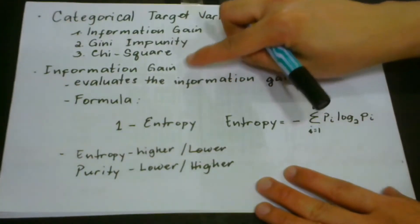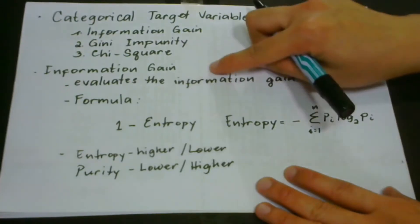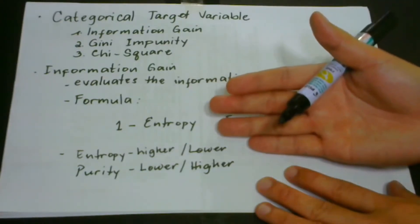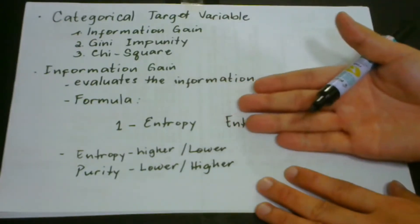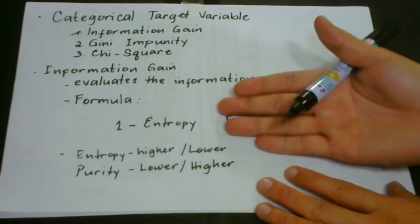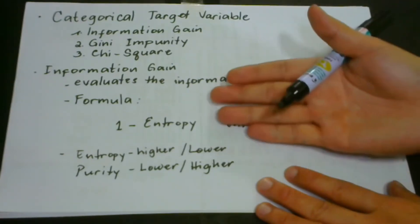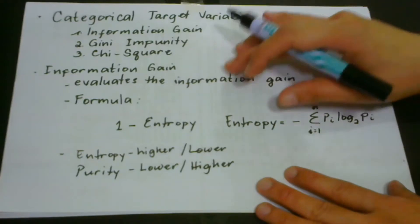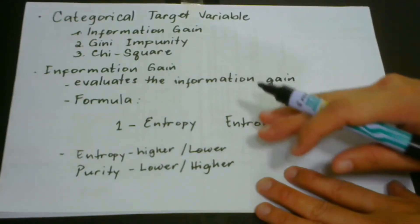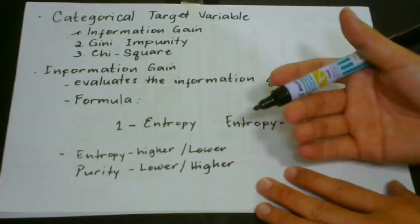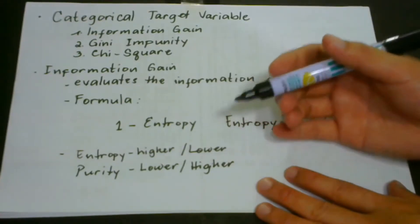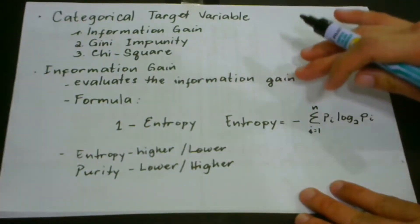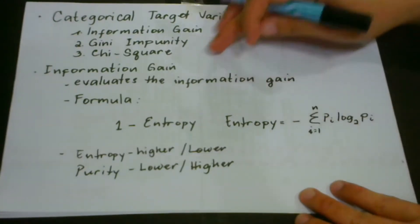Information gain actually calculates the reduction in entropy. Entropy is about information transferred from parent to a child node. In our lesson in Mastering Machine Learning Algorithm, we have a deeper understanding of entropy, and for you to understand information gain, you must have a clearer and deeper understanding of entropy. I suggest you go back to that lesson in Machine Learning Essentials.